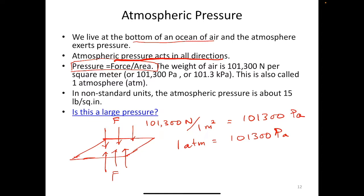An atmosphere is an alternative unit for measuring pressure. Yet another unit is pounds per square inch. If you hold up an area of one square inch, the atmosphere is going to exert a force equivalent to about 15 pounds on that one square inch area. So the atmospheric pressure corresponds to 15 pounds per square inch.